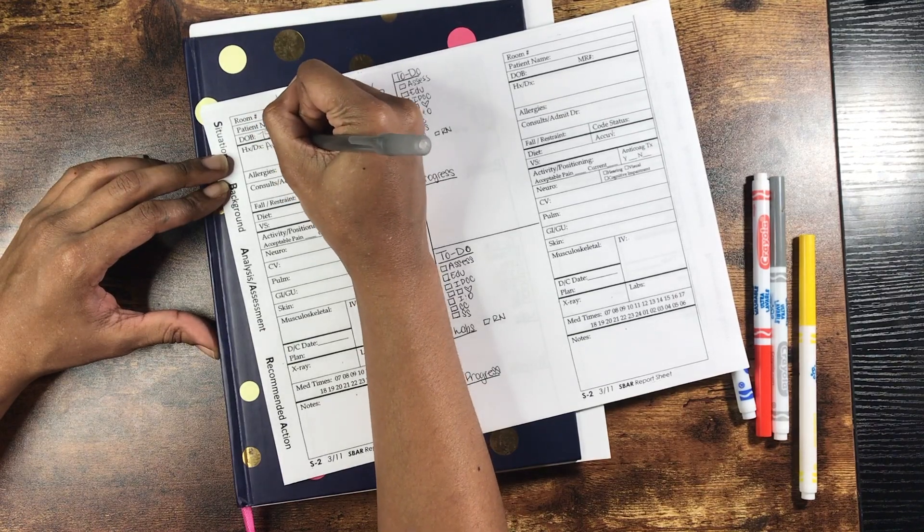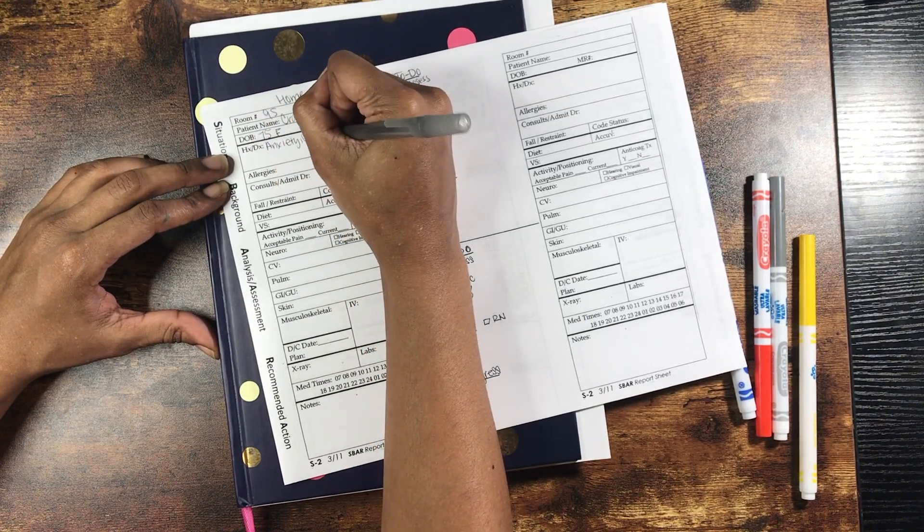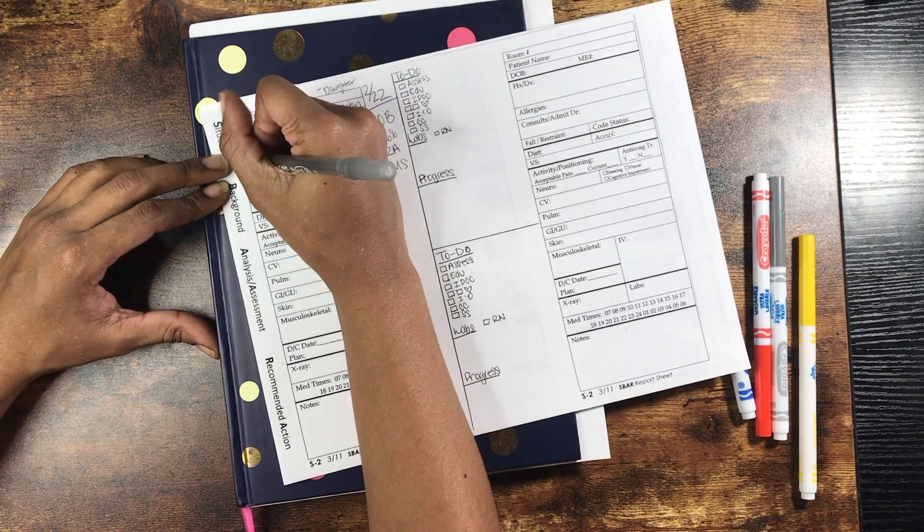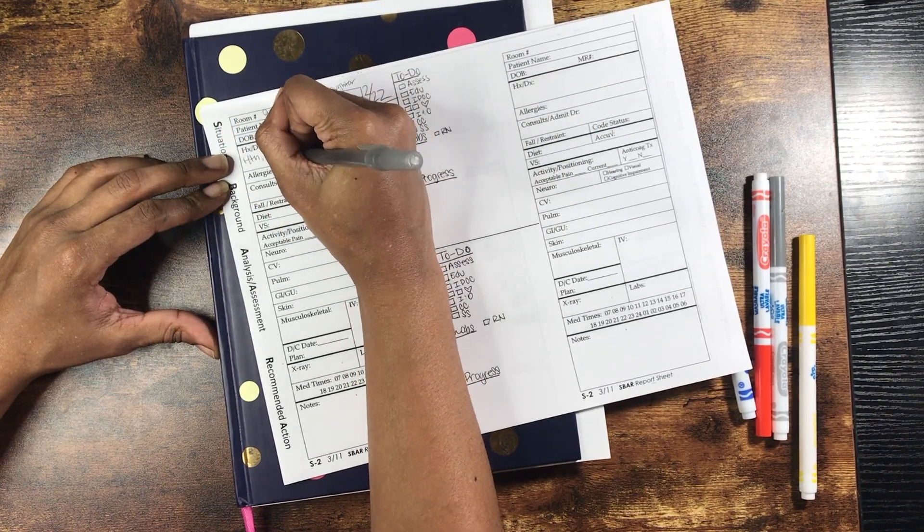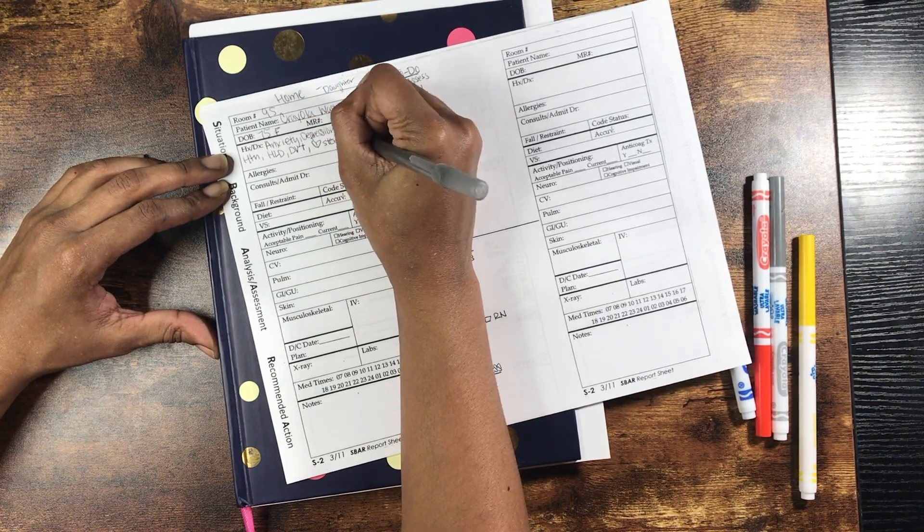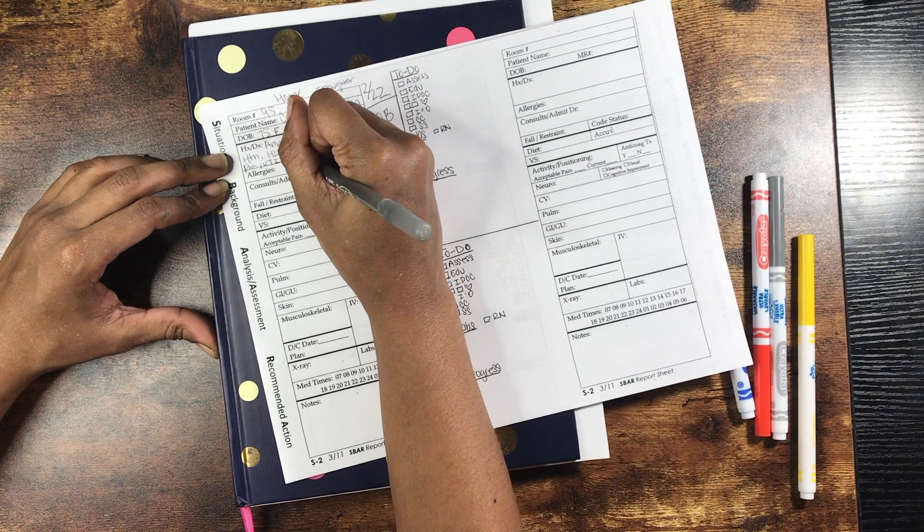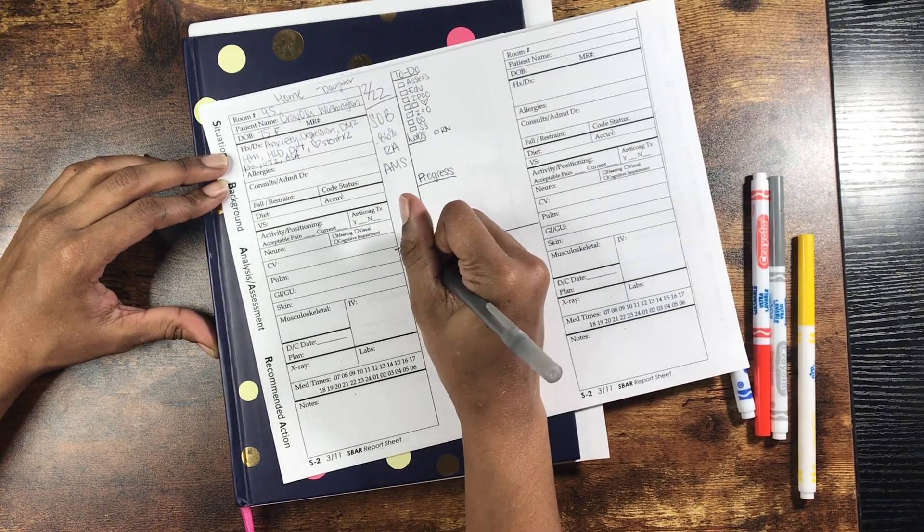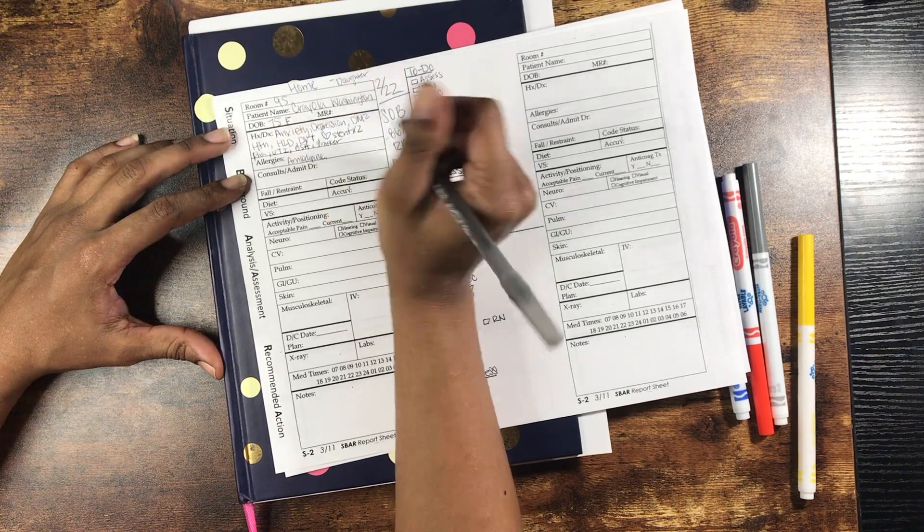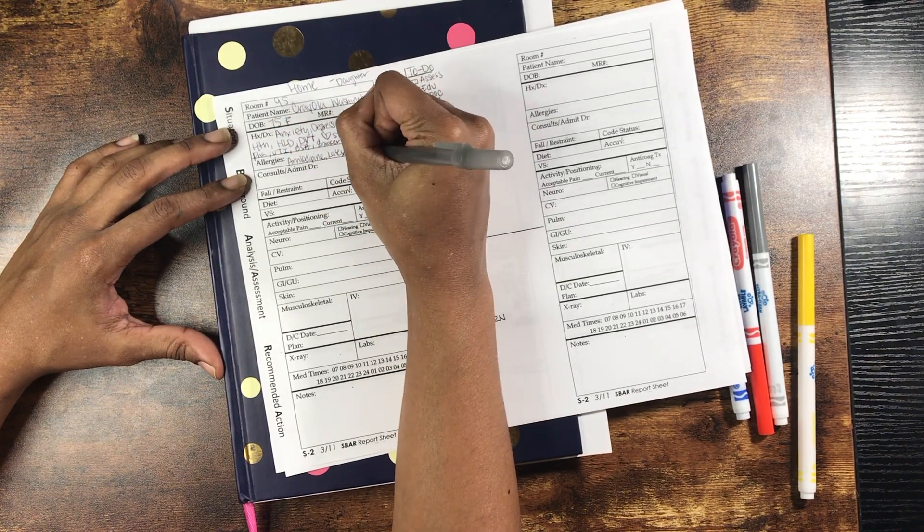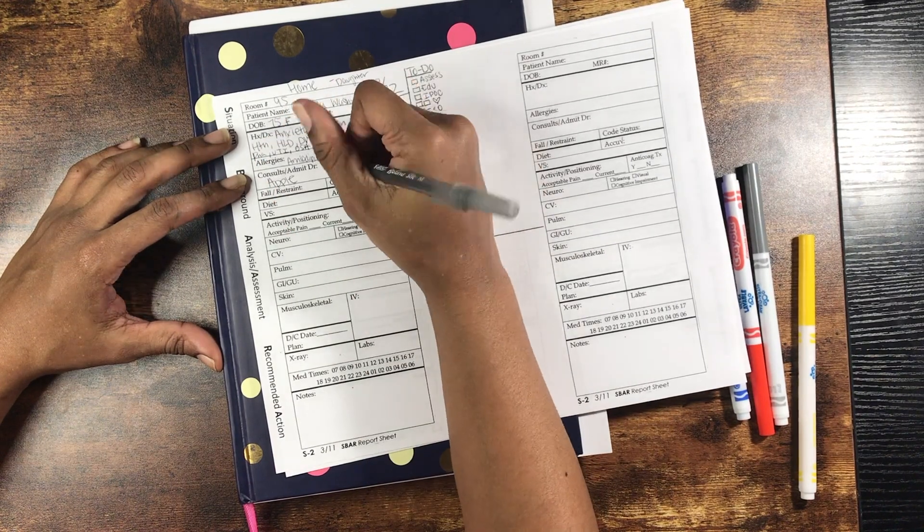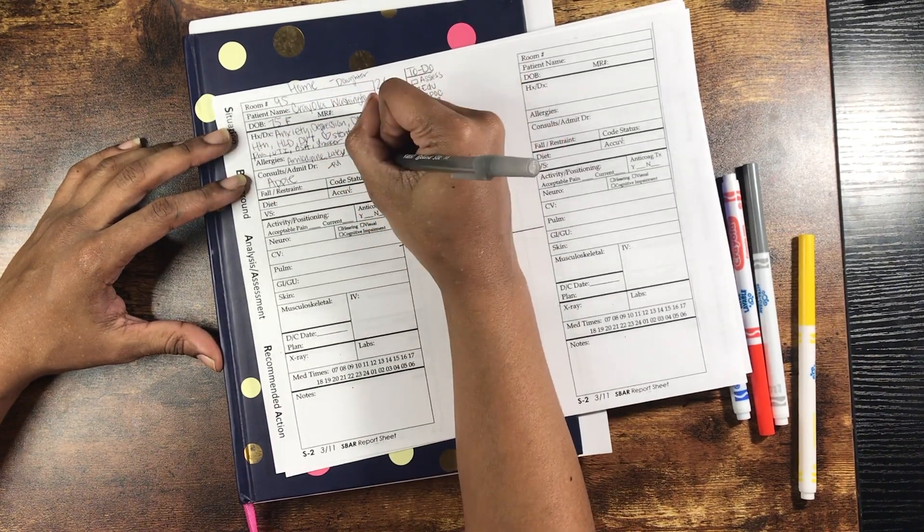She has a history of anxiety, depression, type 2 diabetes, hypertension, hyperlipidemia, blood clots, two cardiac stents, pneumonia, urinary tract infection, sleep apnea for which she uses a CPAP machine at night, and she's a current smoker. Patient has allergies to amlodipine, latex, and strawberries. She has Dr. Apple as her hospitalist, pulmonary, and urology on.